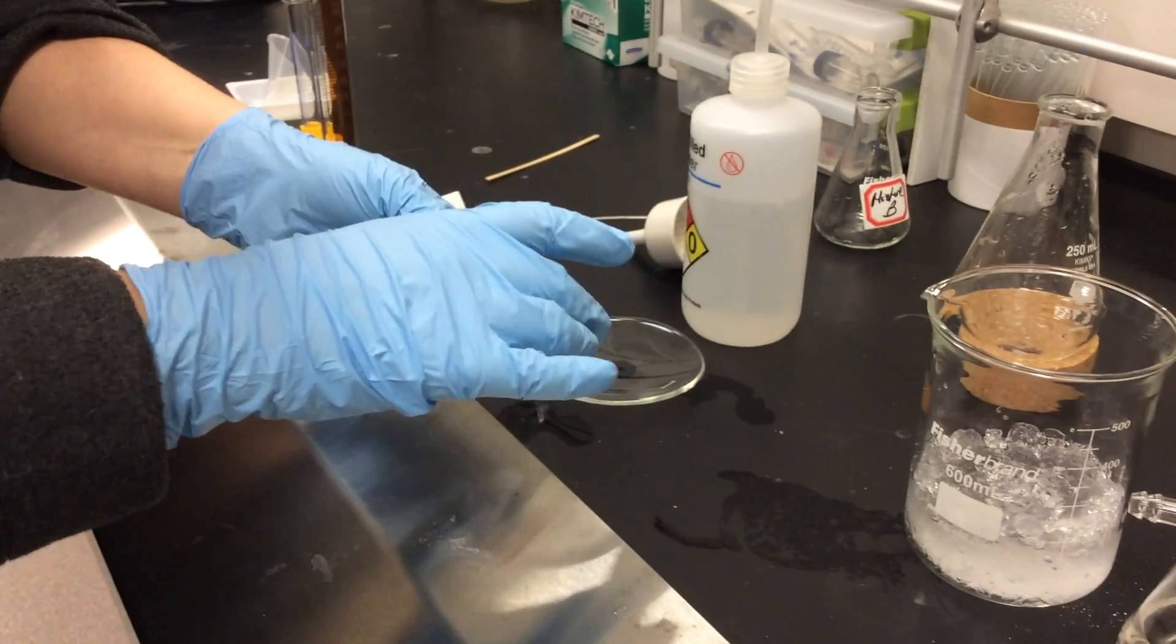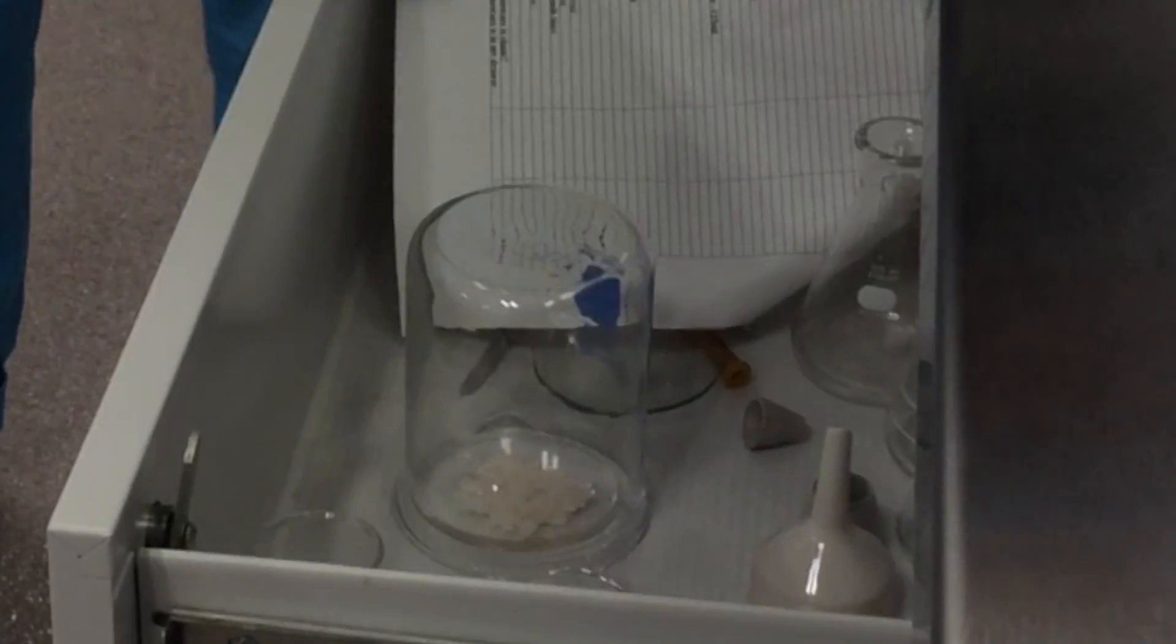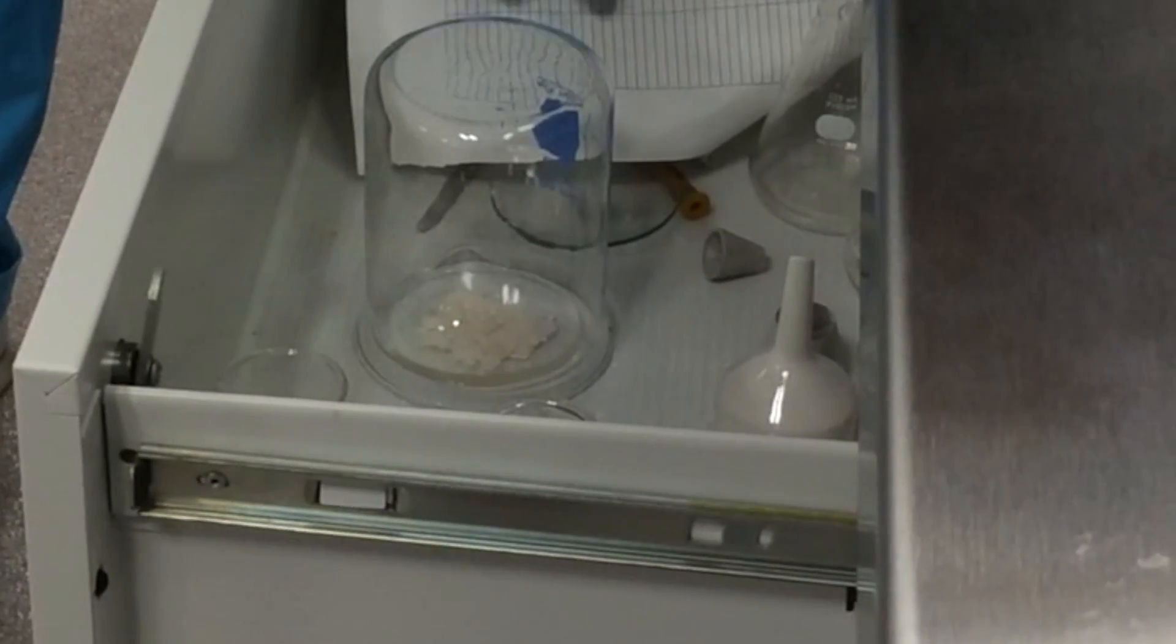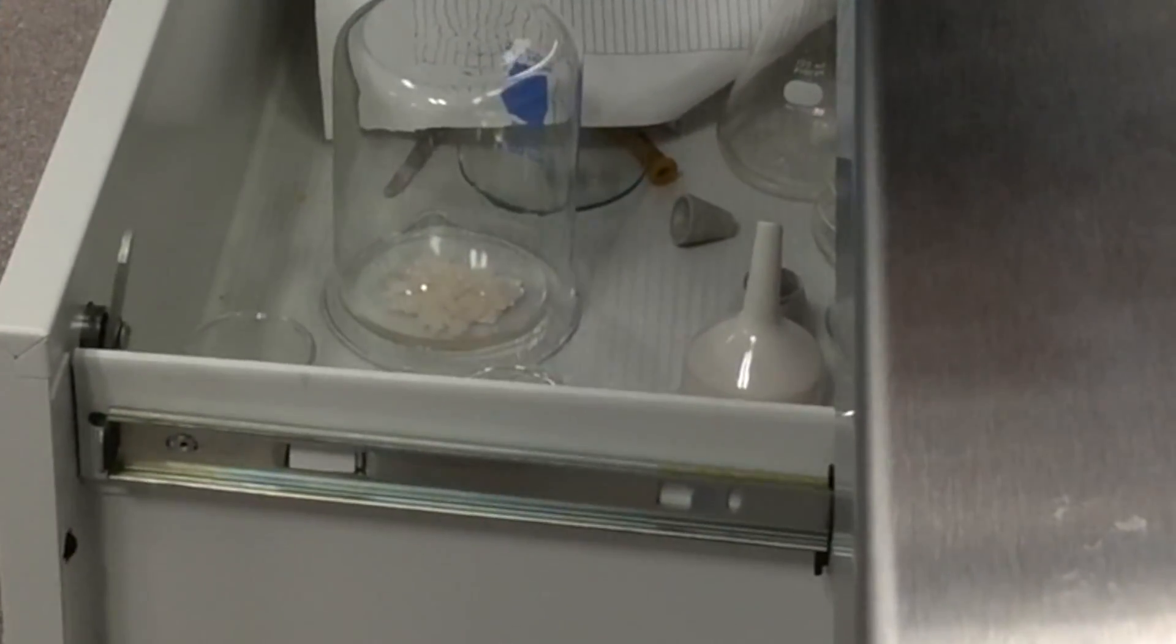What we're now going to do is label the bottom with a label acid anilide. Now we're going to put our pure crystals in our drawer, cover it with a beaker, wait till next week so the crystals can be totally dry to take an accurate weight and melting point.